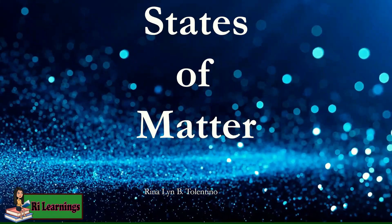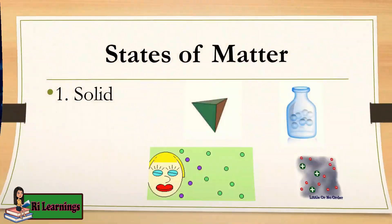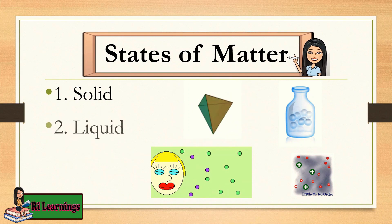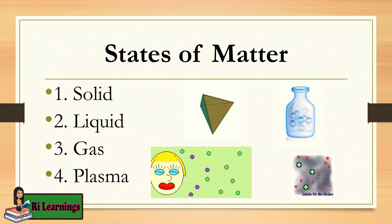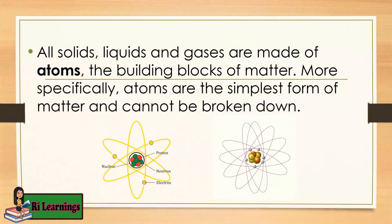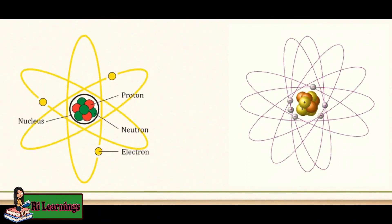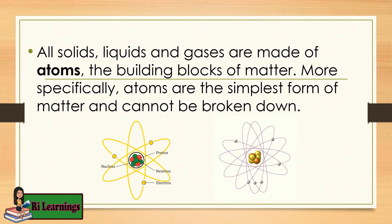States of Matter. There are four states of matter, namely solid, liquid, gas, and plasma. All solids, liquids, and gases are made of atoms — it is the building block of matter. More specifically, atoms are the simplest form of matter and cannot be broken down.